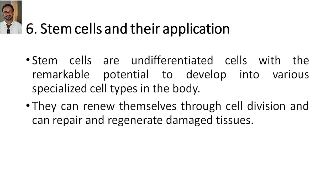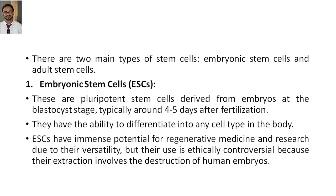Stem cells are undifferentiated cells with the remarkable potential to develop into various specialized cell types in the body. They can renew themselves through cell divisions and can also repair and regenerate damaged tissues. By undergoing differentiation, stem cells can give you liver cells, for example. Every day in our body thousands of cells are dying, so we need new cells — and those cells can be provided by stem cells. There are two types of stem cells: embryonic and adult stem cells.